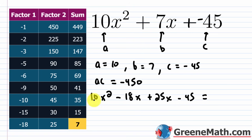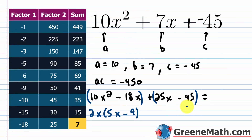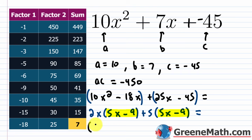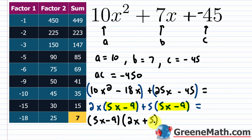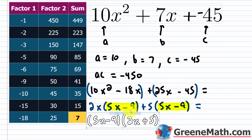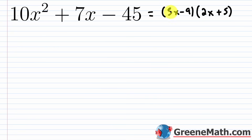Factor by grouping: 10x² − 18x + 25x − 45. From the first two terms pull out 2x: 2x(5x − 9). From the last two pull out 5: 5(5x − 9). The common factor is (5x − 9), giving (5x − 9)(2x + 5). FOIL check: 5x · 2x = 10x²; outer 25x, inner −18x, sum = 7x; last −9 · 5 = −45. All correct.